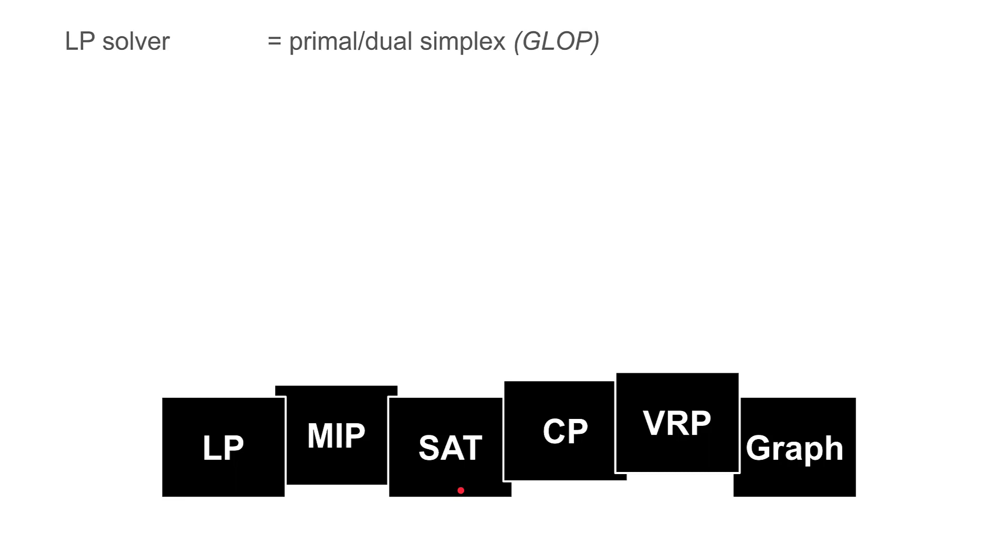First we have the linear programming solver we call GLOP, which is primal-dual simplex. Then we have what we call an old constraint programming solver, and this is the solver that powers the VRP solver. This is something we developed like 10 years ago, and the main technology used there is propagation, and on top of that the VRP solver adds a set of heuristics dedicated just for VRP.